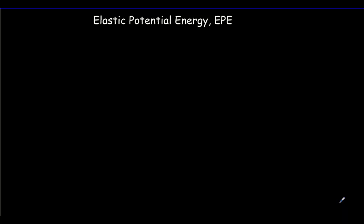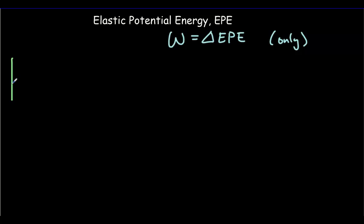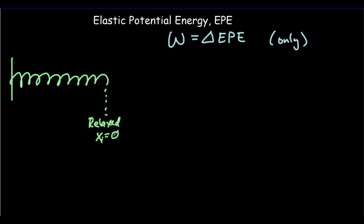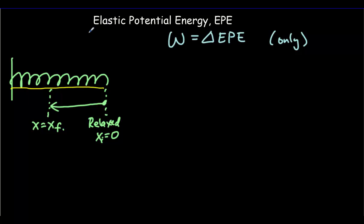Let's find the formula for elastic potential energy stored in a spring. We say work equals change in only the elastic potential energy, so no transformations into kinetic energy, etc. Let's say the spring is relaxed at position x_initial = 0, and we're going to compress it to some final position x_final. To avoid other energy transformations, we do this on a horizontal frictionless surface at constant velocity so there's no change in kinetic energy.